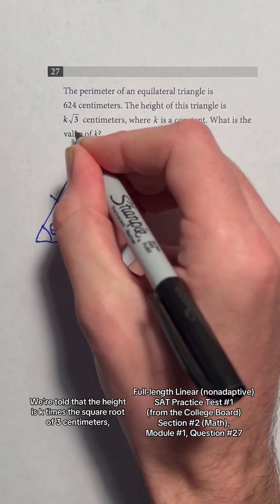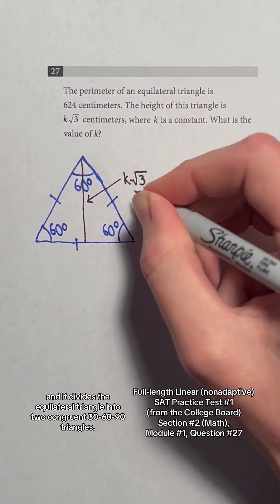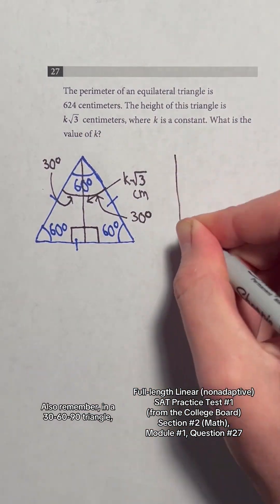We're told that the height is k times the square root of 3 centimeters and it divides the equilateral triangle into two congruent 30-60-90 triangles.